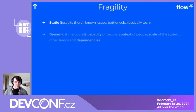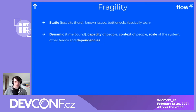Then there's dynamic fragility, which I want to talk about more — it has four parts. From my experience, these four are: the capacity of people, the context of people, the scale of the system, and dependencies and other teams.